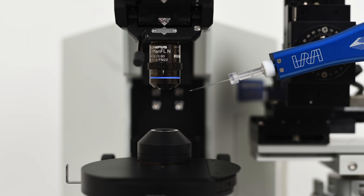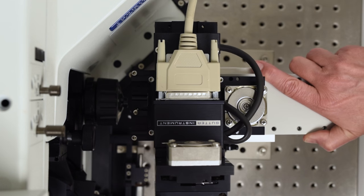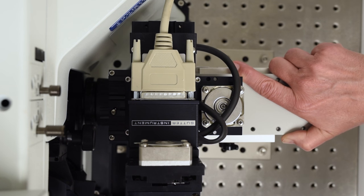As you can see, the manipulator is now short of reaching the objective. With the Sutter MT75 tower, you can simply slide the gantry toward the objective to set the correct working distance.